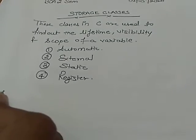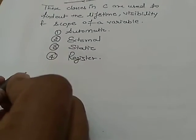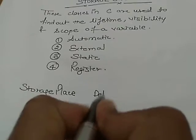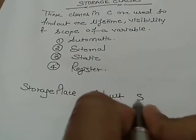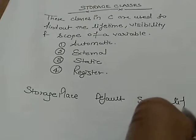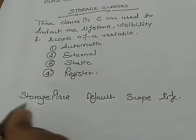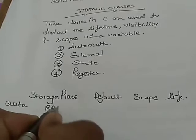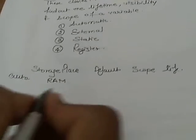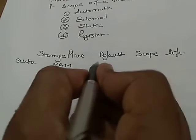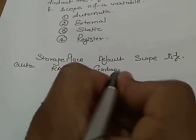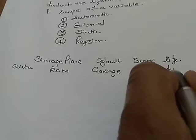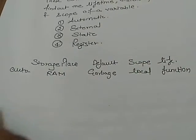Now, storage classes tells us the storage place, default value, scope and its lifetime. First of all, auto storage class, the variable is placed in the main memory. Its default value is garbage value. Its scope is local and visibility inside the function.